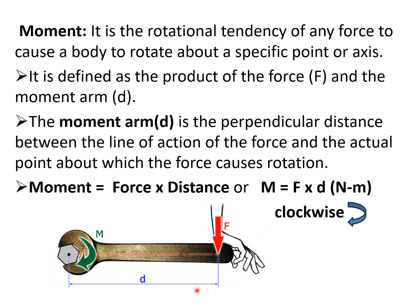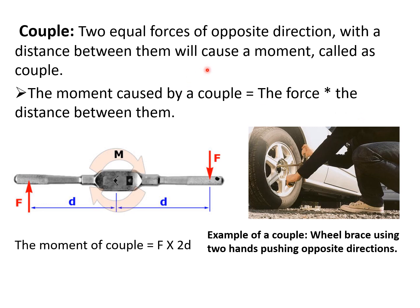Next is couple. Couple is a special case of the moment of forces in which two equal forces in opposing directions with some distance between them are acting, causing rotational tendency in that particular body. The moment of the couple, also known as the coupling moment, is given by the force into the distance between the two forces — here that is F into 2D. An example is using a brace with two hands pushing in opposite directions to get a rotational effect.